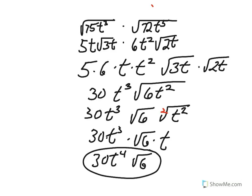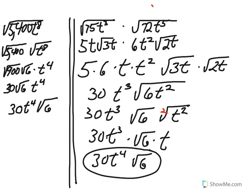And that is our final answer. Please copy this into your notes. If we had done it with the square root of 5,400t to the eighth, we would have had to recognize that 900 is a perfect square that divides evenly into 5,400. That means you would need perfect squares memorized up to 30. As the numbers get bigger, this process becomes more and more difficult. Please copy this all down into your notes if you have not already.